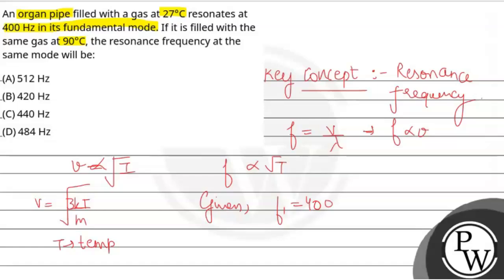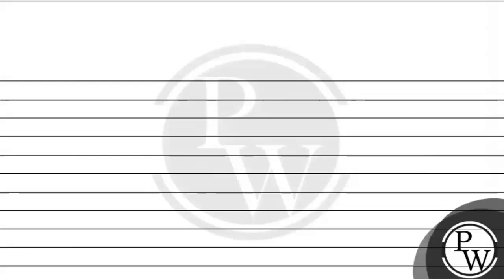So we have given that f1 is equal to 400 hertz at temperature of 27 degree celsius. Now calculate f2 when temperature is 90 degree celsius. So we calculate f1 over f2 is equals to under the root of t1 over t2. Therefore t1 if we put it is 27 degree celsius.